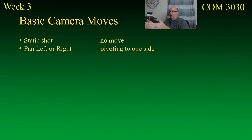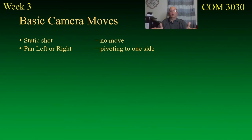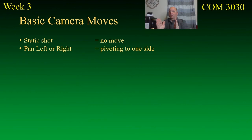A pan is a basic shot where you're panning the camera left or right — pivoting to one side or the other. You don't want to pan unless you're panning to something. Every camera move you make should reveal something that wasn't in the original shot. You've got shot A before the movement and shot B after, and the in-between is the actual move.